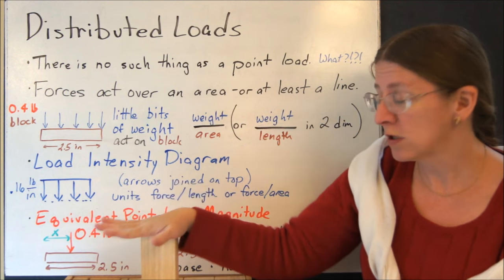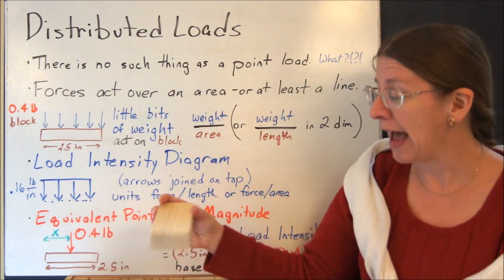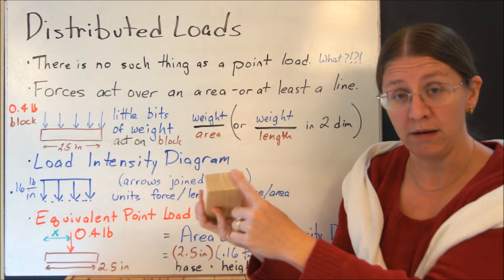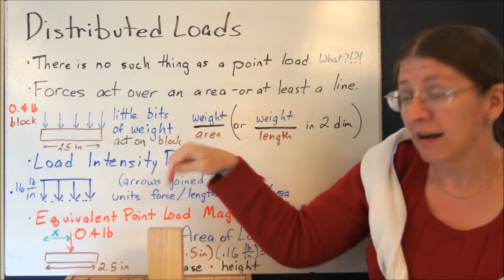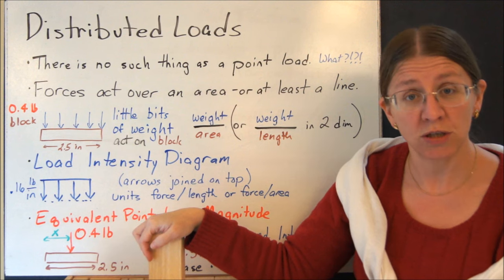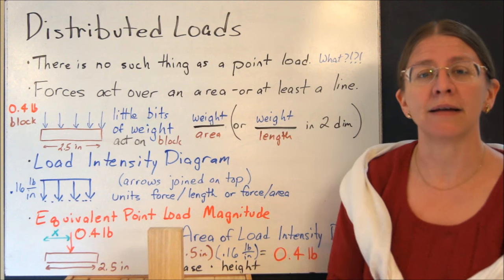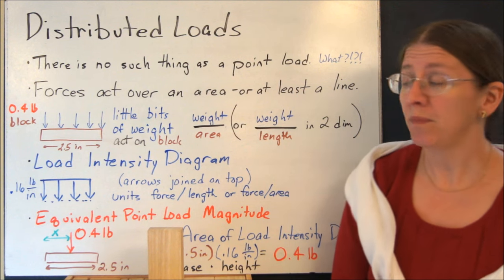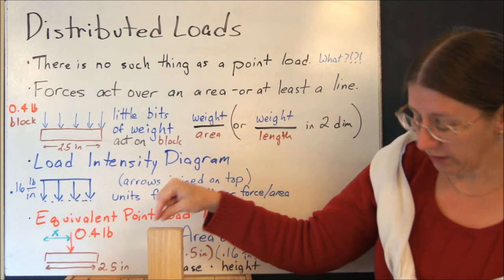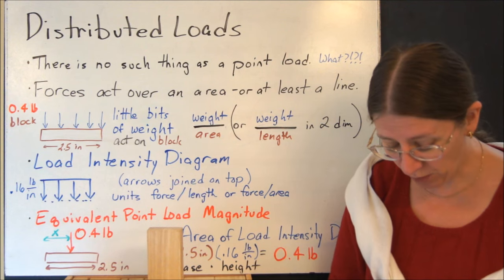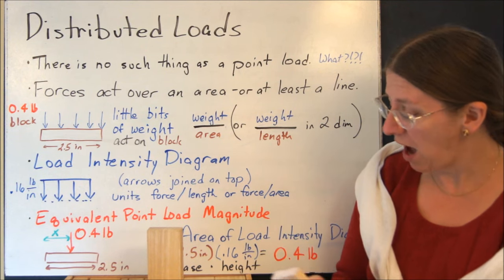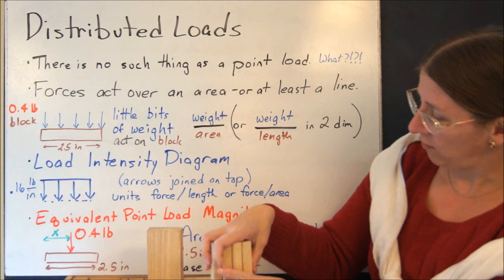So the weight, or the force that I apply here, actually acts over this whole area. Anything under there can get squished. So if that's what I've actually got, how do we deal with that mathematically? Well, there's a little bit of weight over here, and a little bit of weight over here. And if I wanted to, I could think about this block as four blocks.